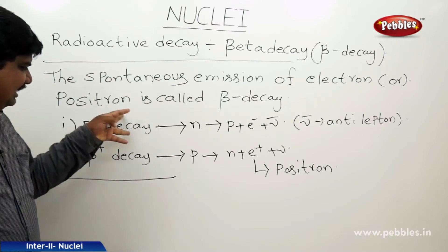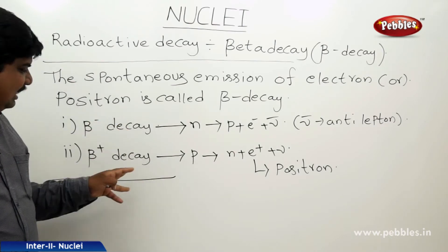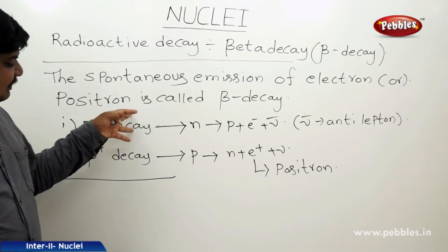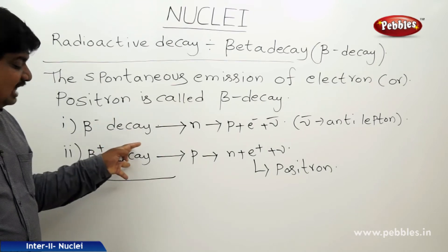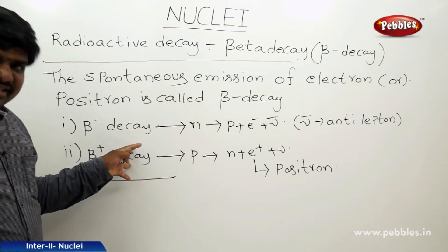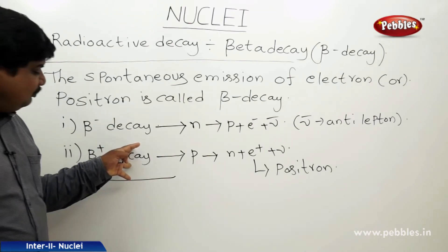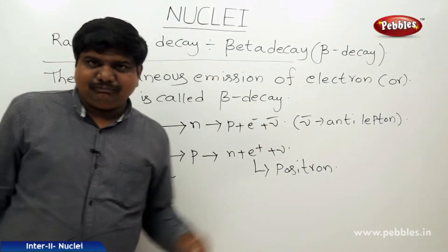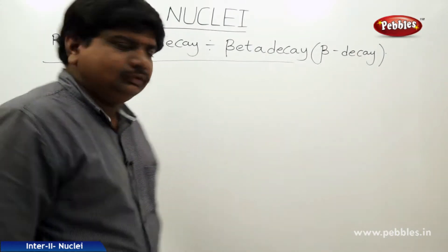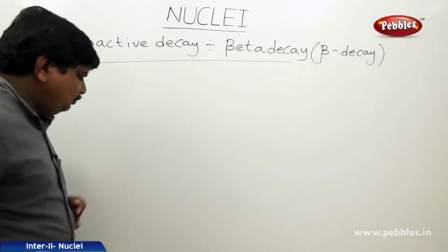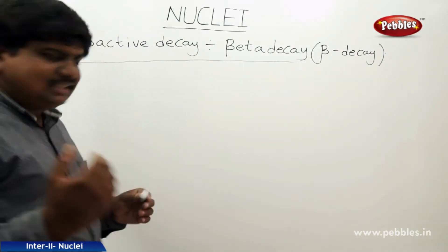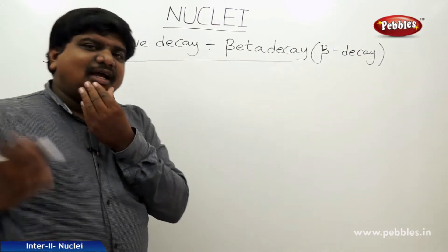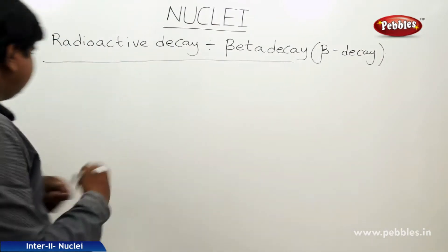In both beta minus and beta plus decay, there are changes in the atomic numbers as well as mass numbers. We will now discuss examples of beta decay and how these reactions take place.